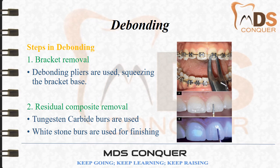The final step of fixed orthodontic treatment is debonding — bracket removal followed by removal of residual composite. Bracket removal is done using specific debonding pliers such as lift-off instruments or cutting instruments, applying a squeezing force at the interface of the bracket base and the tooth surface. Residual composite is removed with tungsten carbide burs, and white stone burs are used for finishing.